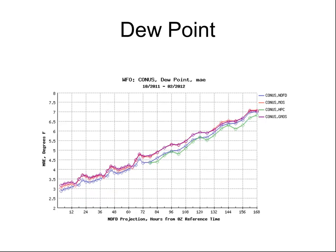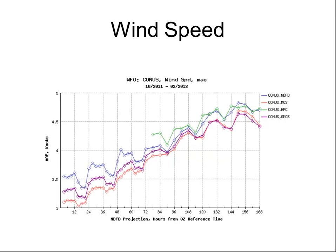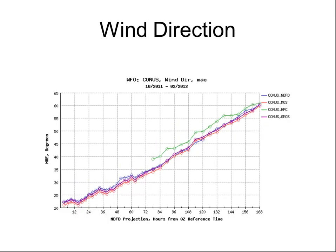Dew point shows similar results. HPC actually has better scores in the extended. Wind speed shows MOS guidance and gridded MOS performing better than HPC and NDFD. Wind direction — all are online, with HPC the worst performer.